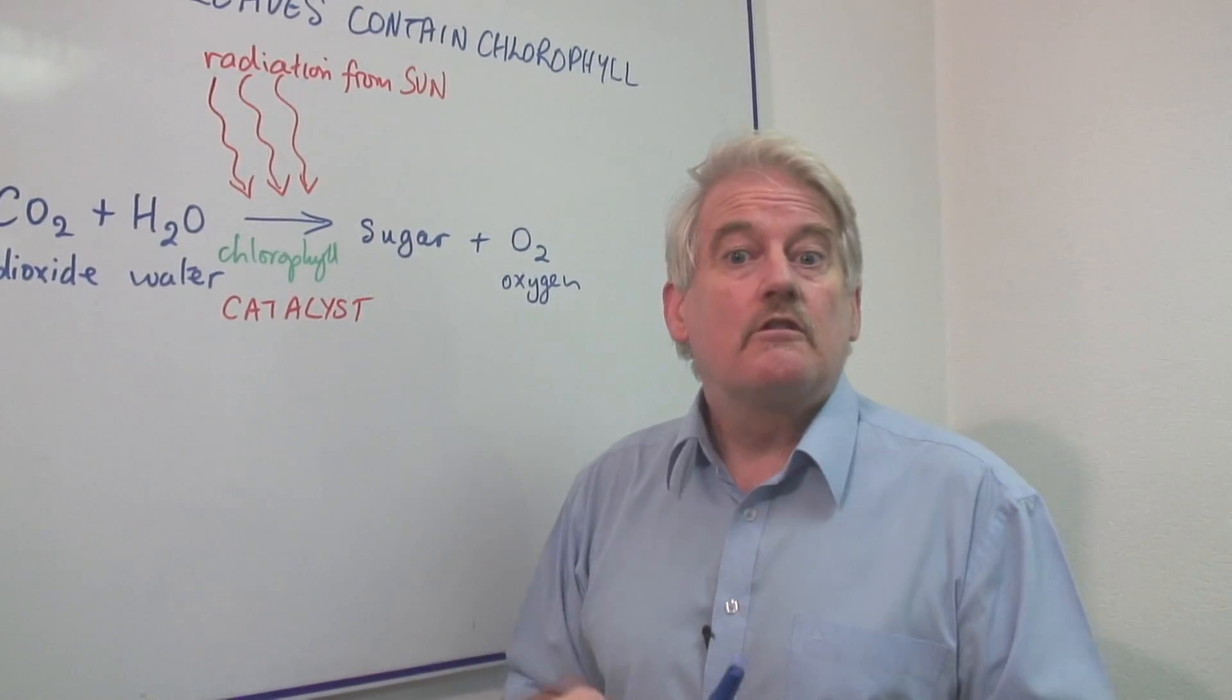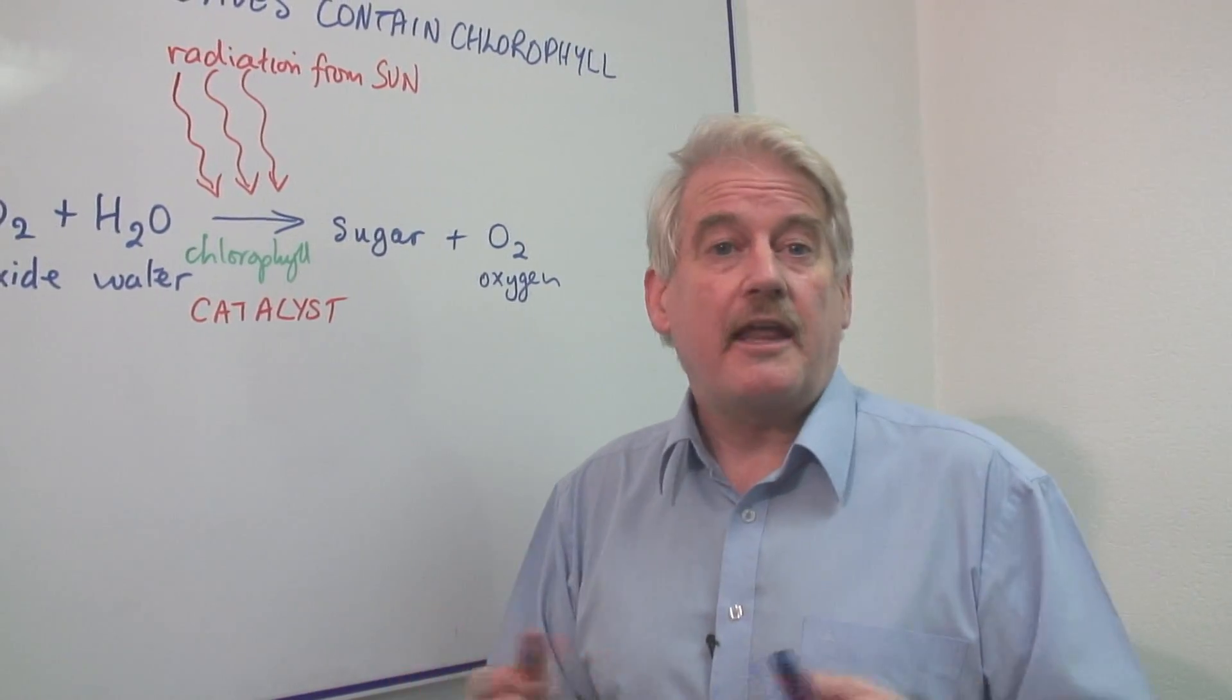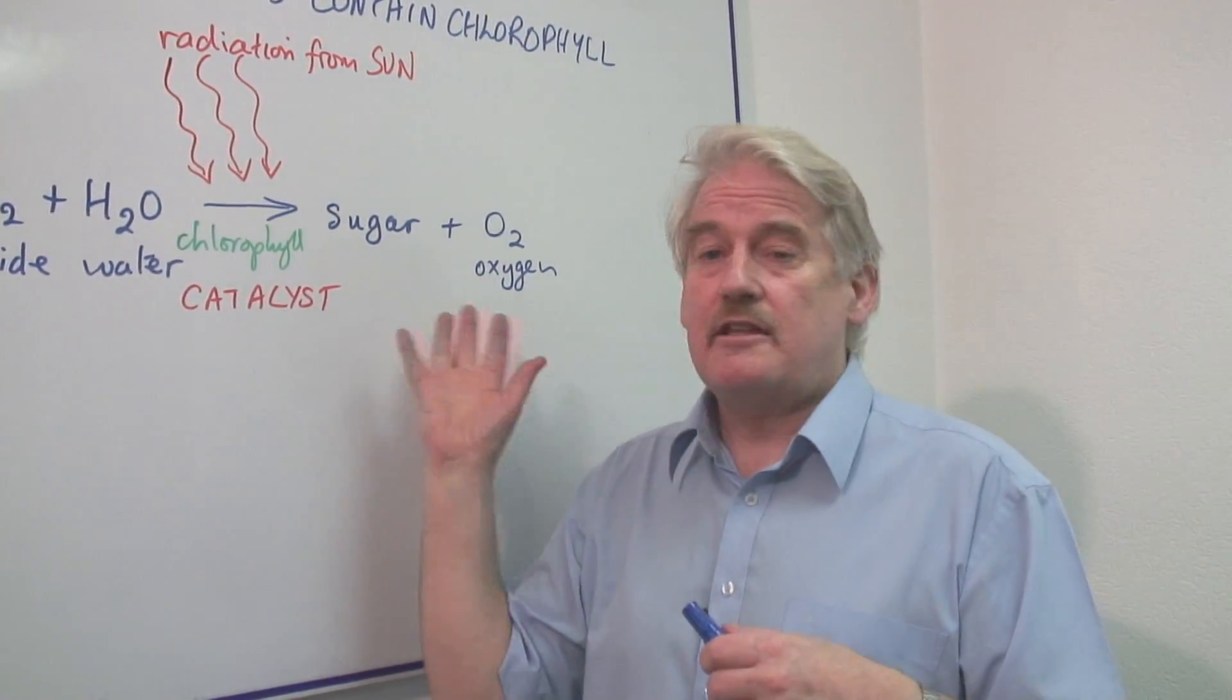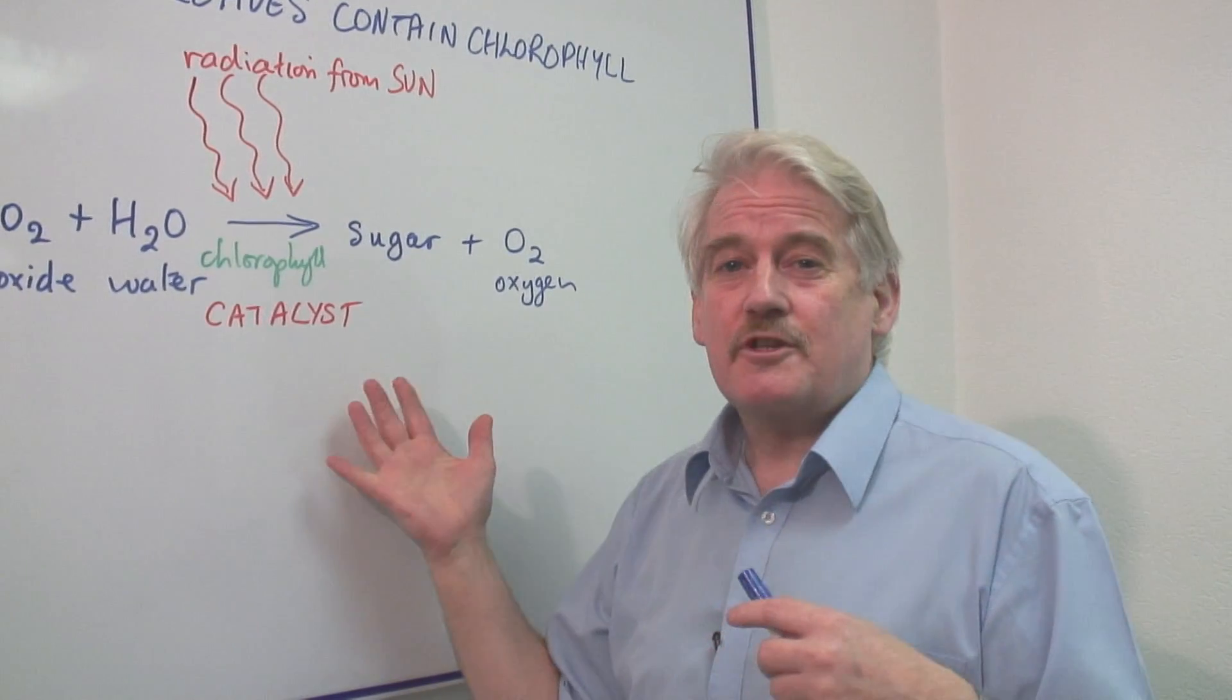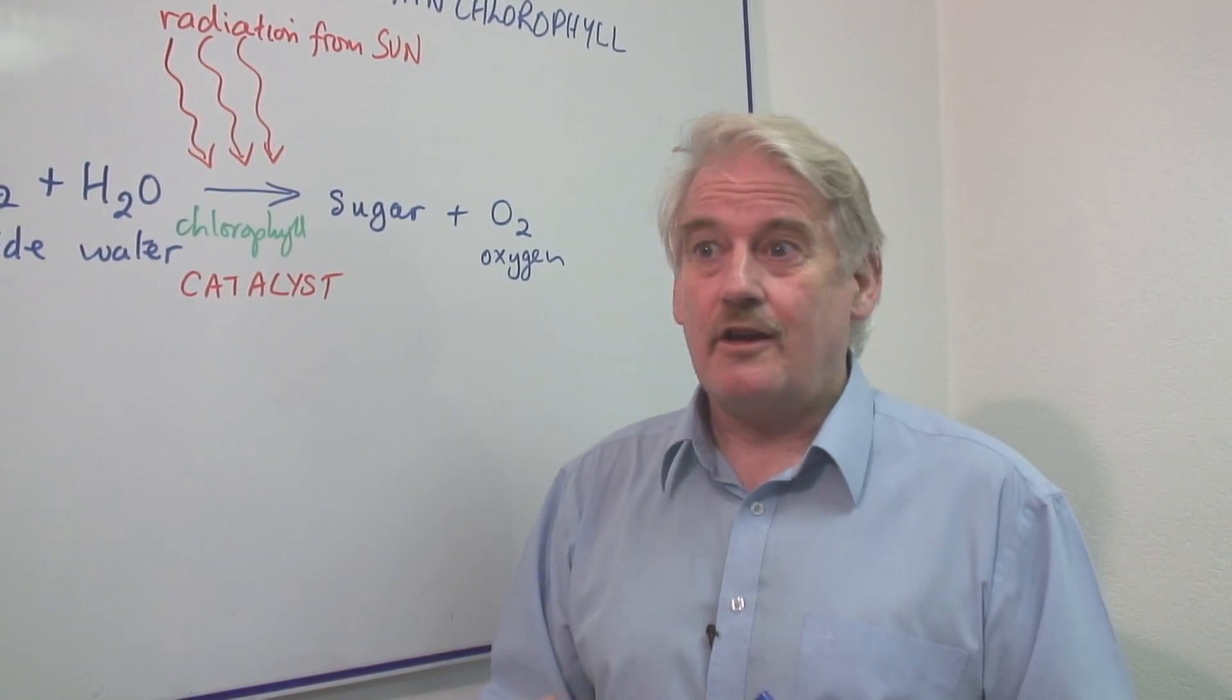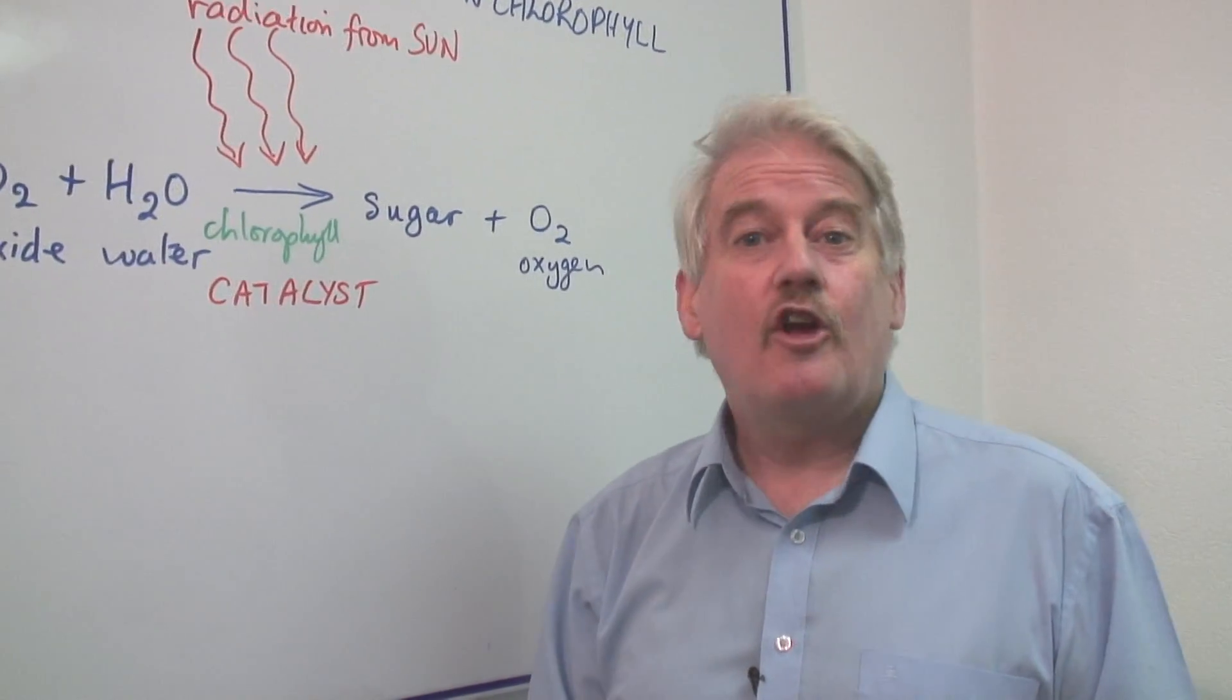These sugars are the stuff from which, through which the plant grows. You can get these sugars and these other chemicals that the plants form by eating them. So the plants harness the energy from the sun, and you get your energy second hand from the sun through plants. And that's why the green leaves contain chlorophyll.